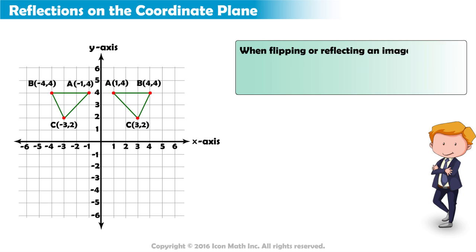When flipping or reflecting an image over the y-axis, the x value in each ordered pair became its opposite.